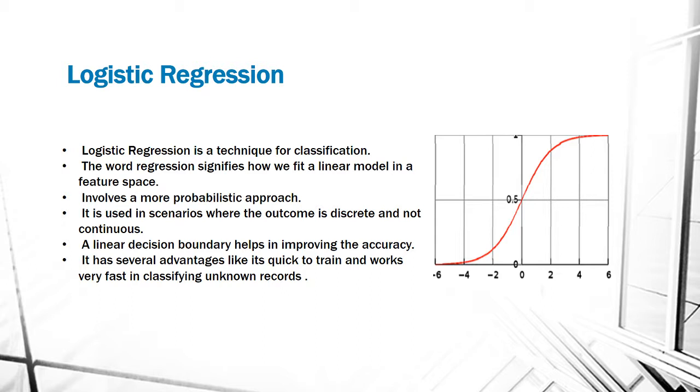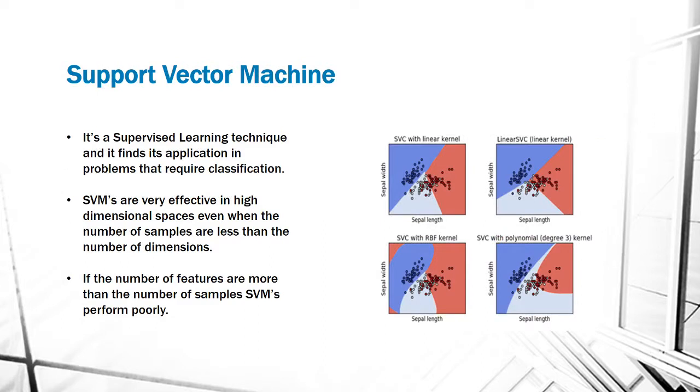Next is support vector machine. It's a supervised learning technique and it finds its application in problems that require classification. SVMs are very effective in high dimensional spaces, even when the number of samples are less than the number of dimensions. If the number of features are more than the number of samples, SVMs perform poorly.